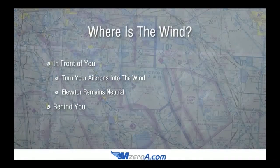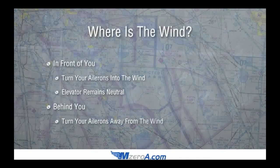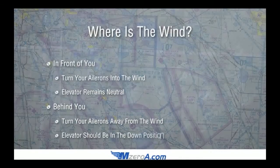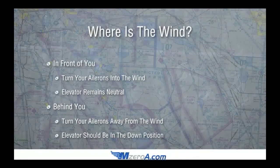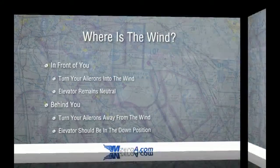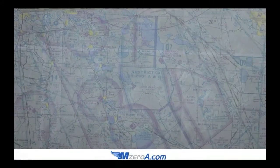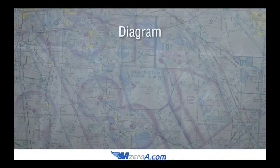What about if the wind's behind you — a tailwind or a quartering tailwind? You want to turn your ailerons away from the wind, and your elevator should be in the down position. Remember this saying: dive away from tailwinds. So you turn your ailerons the opposite direction and dive away with the elevator. Let's go ahead and take a look at a diagram and hopefully all this will make sense.